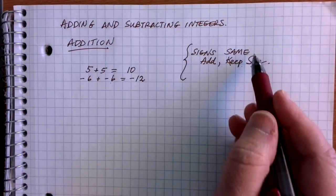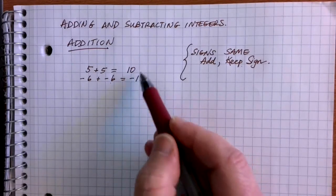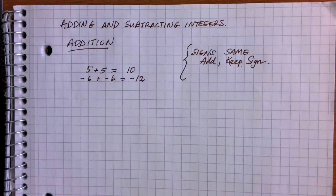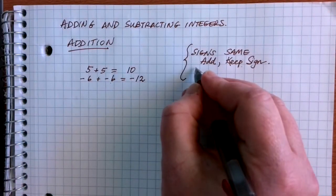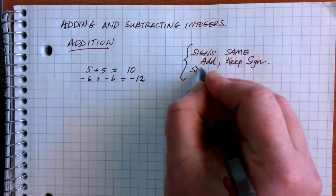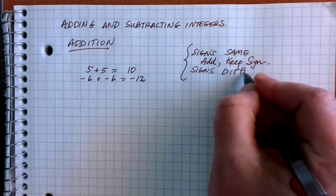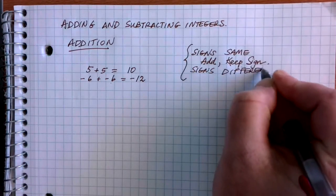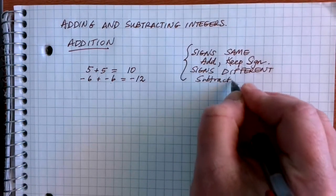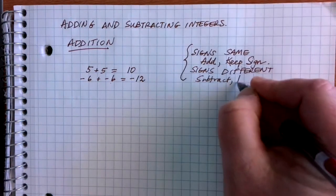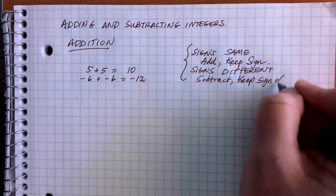So when we're adding, sometimes we get positive numbers and sometimes negative numbers, but it's going to match whatever sign we started with. Where this gets interesting is when our signs are different. When our signs are different, even though it's an addition problem, we're actually going to subtract, and we're going to keep the sign of the bigger number.